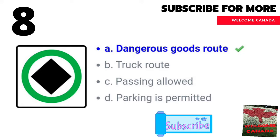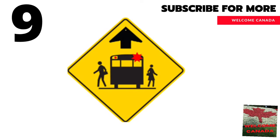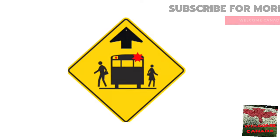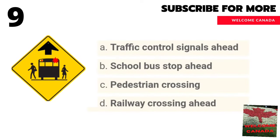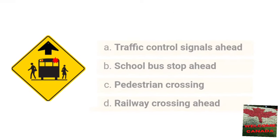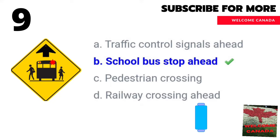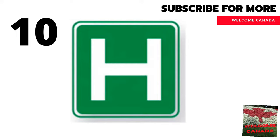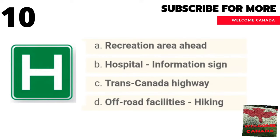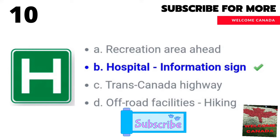The ninth traffic sign is on your screen — choose only one option. The right answer is B: school bus stop ahead. Now the tenth traffic sign — what are you thinking? The correct answer is B: hospital information sign.